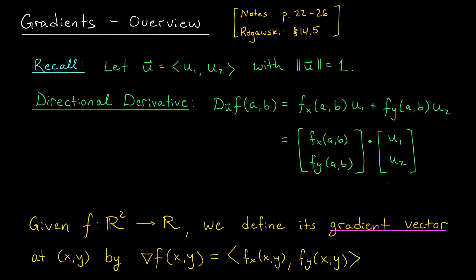Now there's nothing special here about R². We could have made this exact same definition with a function that starts in Rⁿ. We would just have to add more components. So for example, if f starts from R³ and maps into R, its gradient is the vector fx, fy, fz.